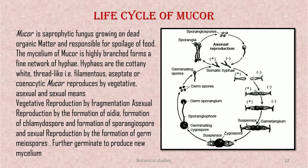Hyphae are cottony white thread-like, filamentous, aseptate or coenocytic. Mucor reproduces by vegetative, asexual, and sexual means: vegetative reproduction by fragmentation; asexual reproduction by the formation of oidia, chlamydospores, and sporangiospores; and sexual reproduction by the formation of germ meiospores — all of which further germinate to produce new mycelium.